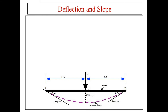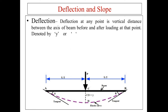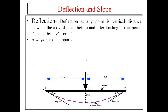The picture shown here is a simply supported beam with a point or concentrated load at the center. There are some deflections and an elastic curve. Deflection at any point is the vertical distance between the axis of the beam before and after loading at that point. It is denoted by Y or Delta. Deflection is always zero at the supports.